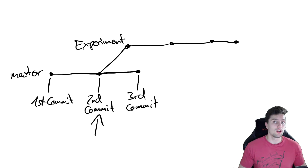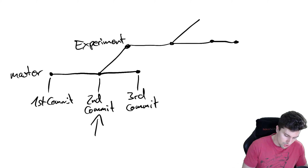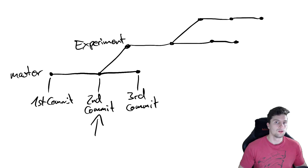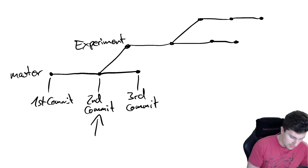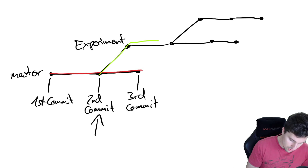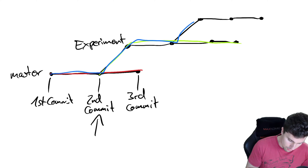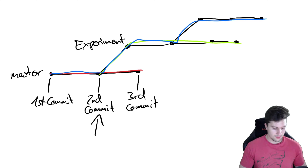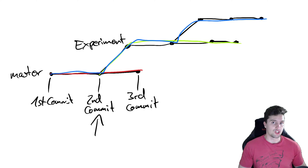There are no limits to how many branches we can create. If we are currently in the experiment branch, we could also create more branches with their own commits. In the end we just have our master branch with its commits, our experiment branch with its commits, and another branch with its own commits — so you can see which commits belong to which branch.